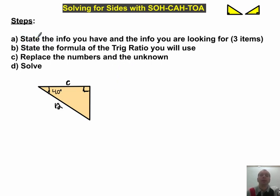Okay, finally get to solve a problem. These are the steps that we want to follow. We state the info we have and the info that we're looking for, three items. So on this triangle, what do we have? Well, I have an angle, and I call that theta. I have this side 12, which is the hypotenuse, right? Because it's across from the right angle. So I got the hypotenuse. And I'm looking for C. And C, because I've got this angle, C is the adjacent.